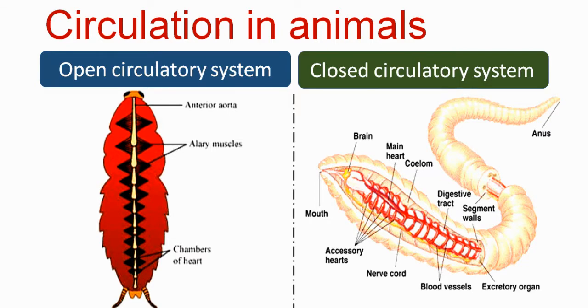For example, in cockroach, the blood vessel leads to a 13-chambered heart arranged in a conical structure.